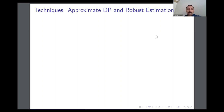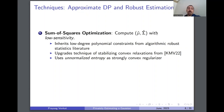I'll now tell you about the techniques behind Theorem 1, specifically for approximate DP and robustness. Our first main technique involves the sum of squares semidefinite programming hierarchy. The output of this first step will be estimates mu hat and sigma hat satisfying optimal utility and robustness guarantees while also being low sensitivity — meaning these estimates do not change much in certain norms upon changing one input data point. To achieve this, we use an existing system of low-degree polynomial constraints from the algorithmic robust statistics literature.